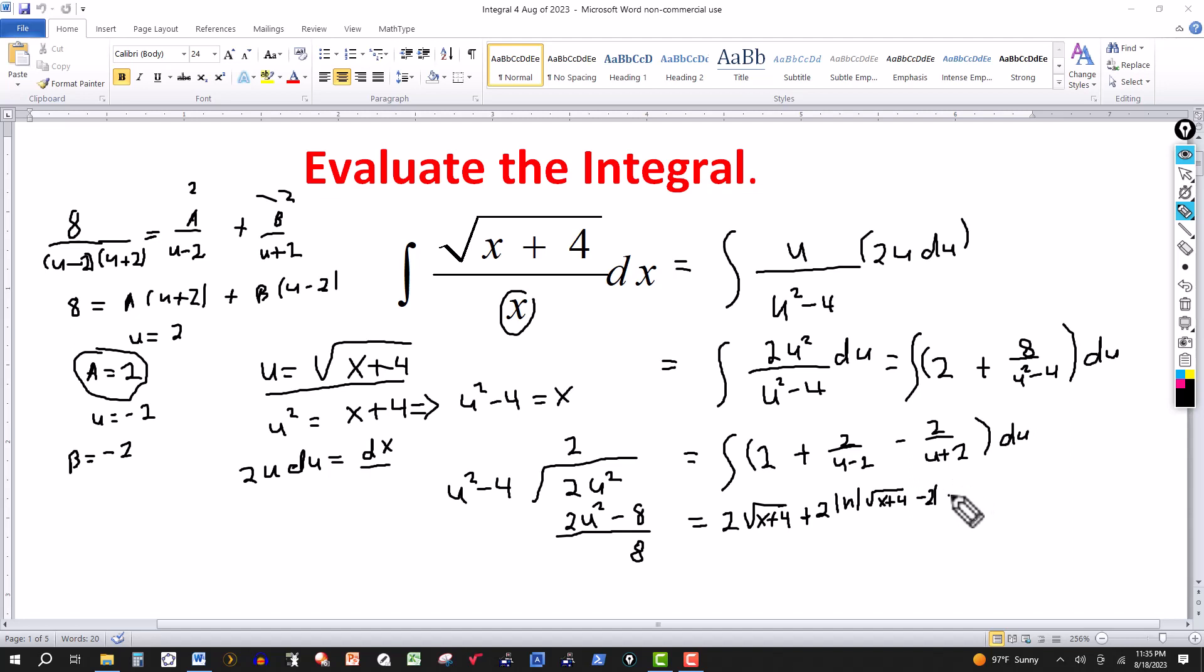Same sort of thing in the next one. This will be minus 2 natural log of u plus 2. And u is the square root of x plus 4. So here I have square root of x plus 4. That's positive and plus 2, that's positive. So here I don't need absolute values. I just put parentheses here plus constant of integration.